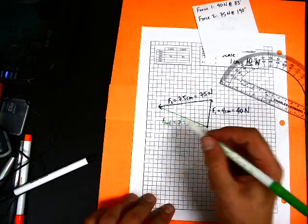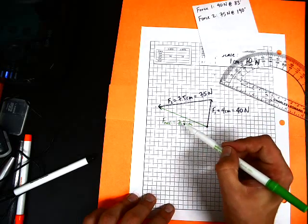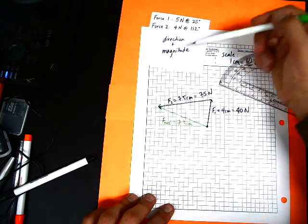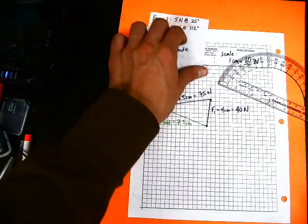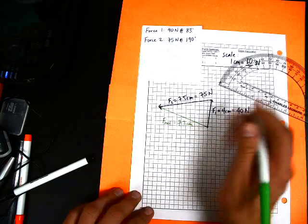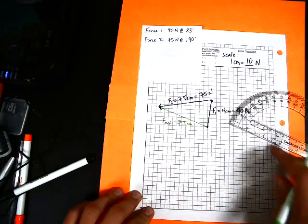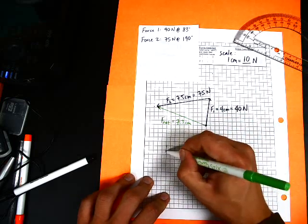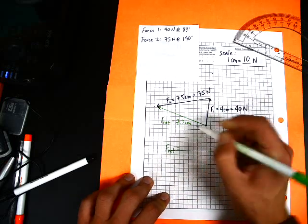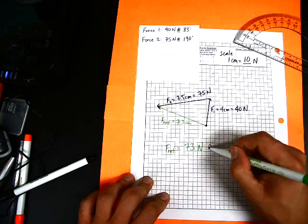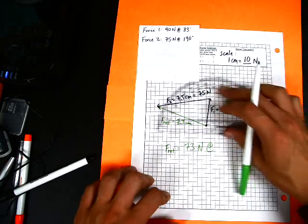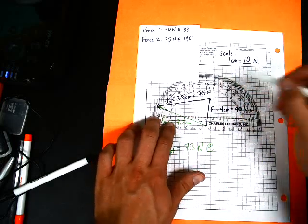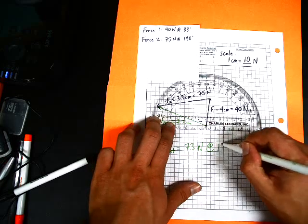We're not quite done. We have found our net force, but we need to know the direction and the magnitude of our net force. Our scale was 10 newtons, so 7.3 centimeters times 10 newtons for every centimeter. Our net force is 73 newtons at an angle of 160 degrees, right on the dot.